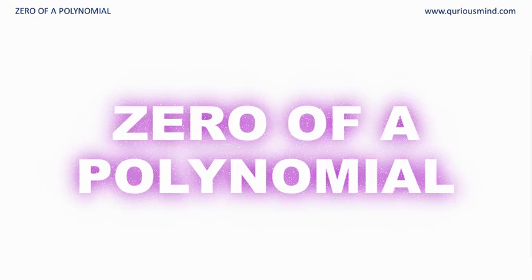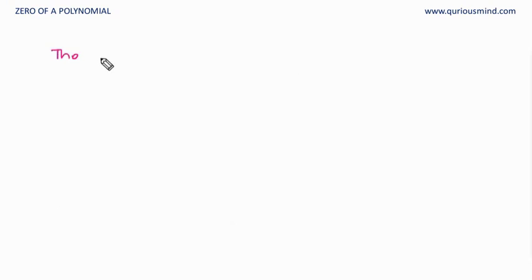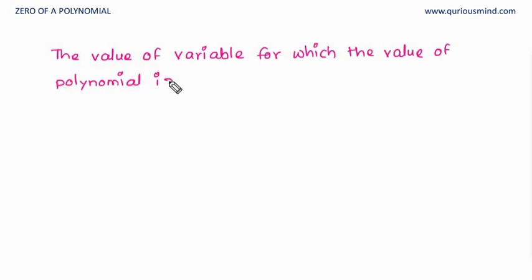Hello everyone. In this video, let's talk about zero of a polynomial. The value of a variable for which the value of polynomial is zero is called zero of polynomial.